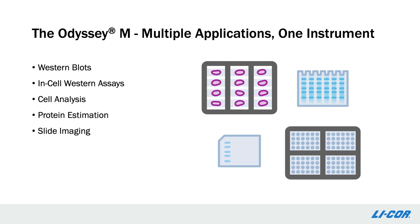As scientists, we are often asking complex questions that require a multitude of experiments to dissect and answer. This often requires using a variety of different instrumentation. For example, if you are interested in how a particular treatment impacts a certain type of cell and what the mechanism behind that treatment is, you might be looking at direct outcomes such as cell viability after treatment, involvement of specific proteins using western blots, and changes at the tissue level.